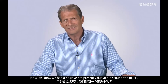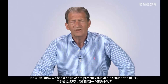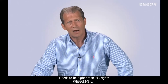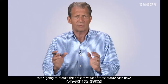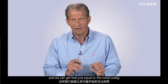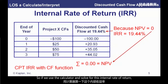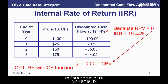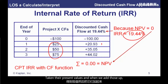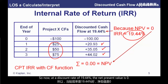We know we had a positive net present value at a discount rate of nine percent. So the discount rate that's going to make that equal to zero needs to be higher than nine percent — using a higher discount rate reduces the present value of those future cash flows — until we get that just equal to the initial outlay. Using the calculator to solve for this internal rate of return, we find it's 19.44 percent. So we've discounted those future cash flows at 19.44 percent, and when we add those present values up, they just equal the initial outlay of 100, making the net present value zero.